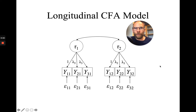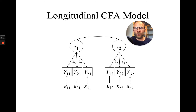One model that people frequently use in longitudinal studies is a longitudinal confirmatory factor model like this one here. We have multiple indicators — in this case three — that were measured on two time points. Of course, you could have more indicators and/or more time points, but this is just to show you a generic longitudinal CFA model.